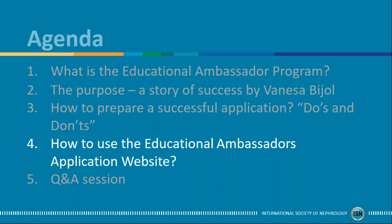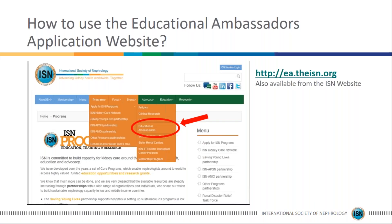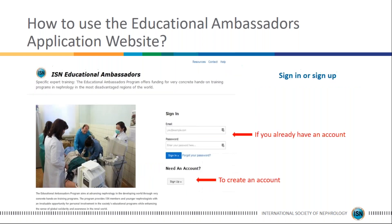How to apply: applications are done via our application website. You can access it directly at ea.theisn.org, or via theisn.org by going to Programs, Apply for ISN Programs, and selecting Educational Ambassadors. When you do so, you will see the login page where you can log in if you already have an account using your existing credentials, or create a new account by clicking the sign-up button.